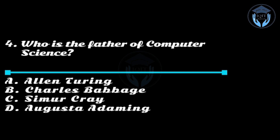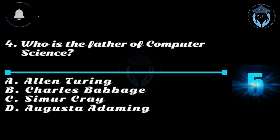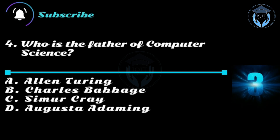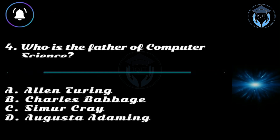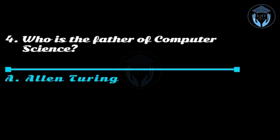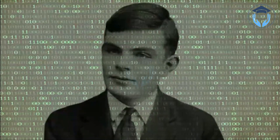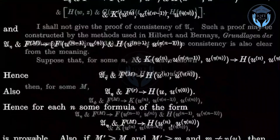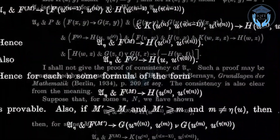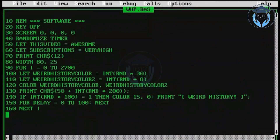Question four: Who is the father of computer science? Option A: Alan Turing, option B: Charles Babbage, option C: Seymour Cray, option D: Augusta Ada King. Answer: option A, Alan Turing. The title of father of computer science is often attributed to Alan Turing, a British mathematician and computer scientist who lived in the 20th century.